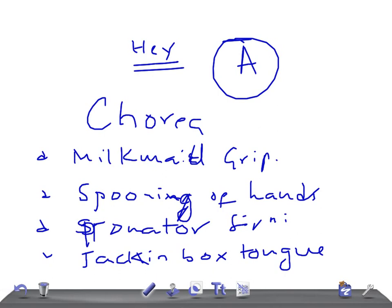The signs used to elicit chorea are milk made sign, spooning of the hands, pronator sign, and jack in the box tongue. These are the important signs you should check in patients with chorea. Chorea is mostly seen in rheumatic fever and rheumatic heart disease. Thank you so much for watching this video.